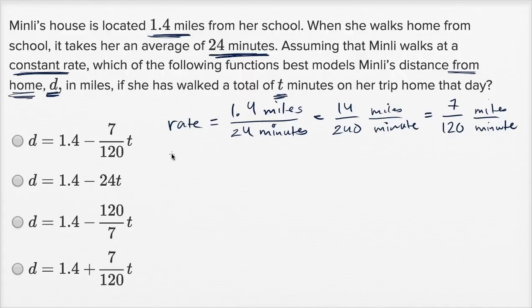So there's a bunch of ways that we can tackle it, but maybe the easiest one is, what's her distance from school? Distance from school, that's just going to be her rate times t, times how much time has passed by. When time is zero, she's going to be at her school. As time increases in minutes, she's going to get further and further away from her school. But her distance from home, her distance from home is going to be 1.4 miles minus the distance from school.